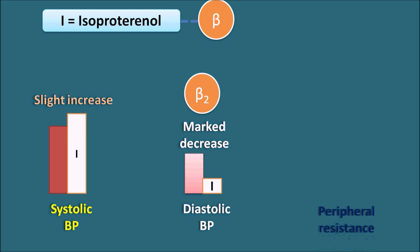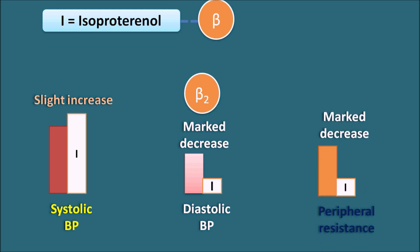For peripheral resistance, administration of isoproterenol causes a significant decrease, again due to beta-2 receptor activity. Isoproterenol shows a marked effect on diastolic blood pressure and peripheral resistance because of its vasodilatory response through beta-2 receptors. It shows only a slight increase in systolic blood pressure because of beta-1 action, and since it has no alpha action, its effect on systolic blood pressure is minimal.